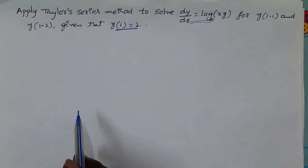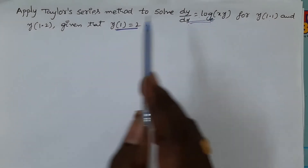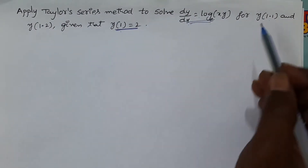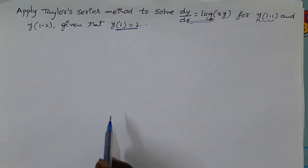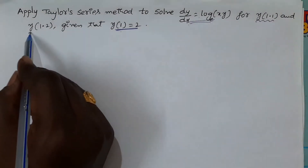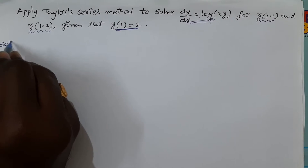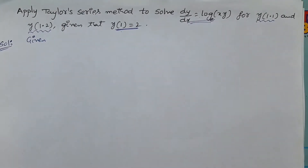This is the given first order differential equation. First of all we have to find the solution of this differential equation at the given initial condition. After that we have to find y(1.1), meaning the y value at x = 1.1, and the y value at x = 1.2. This is the statement of the given problem.